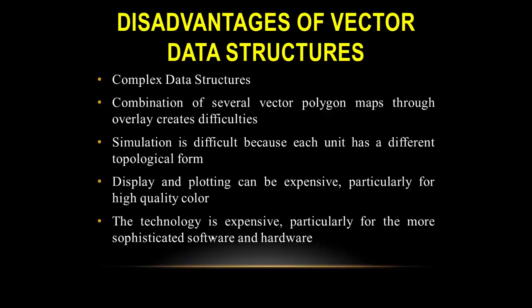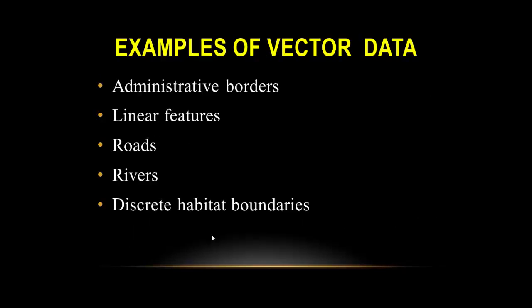Examples of vector data include administrative borders, linear features such as roads and rivers, and discrete habitat boundaries.